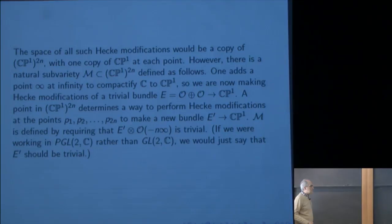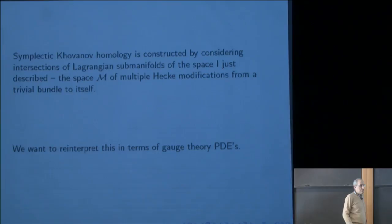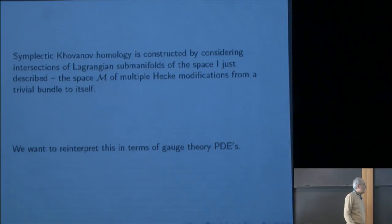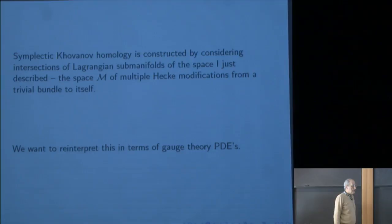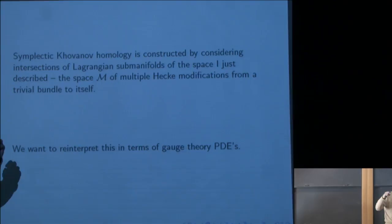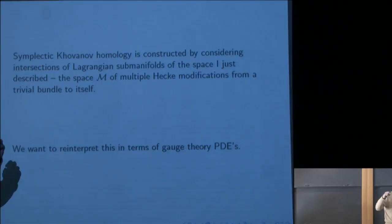M is defined by saying that if we twist so that the degree is 0 again, the bundle should be trivial. That will be true generically, but not always — we'll be throwing away a divisor where it is not true. So M is the complement of a divisor in (CP^1)^{2n}. Symplectic Khovanov homology is constructed by considering intersections of Lagrangian submanifolds in the space I just described. When you throw away that canonical divisor, you get a complex symplectic and even hyperkähler manifold, and symplectic Khovanov homology involves Lagrangian intersections in this complex symplectic manifold.